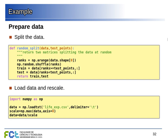We load the data using numpy's loadtxt function, which handles tab-separated or comma-separated files. Then we scale everything by dividing the data by the maximum value for each column. We call the max function on the matrix along the first axis to get a vector of column maximums, then divide the matrix by that vector — this normalizes each column by its maximum.